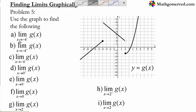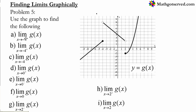Let's start with part A. This is y equals g of x. The question says use the graph to find the following. In this example we want to find the limit of g of x as x approaches negative 4 from the left side. That minus sign means you are approaching negative 4 from the left side.